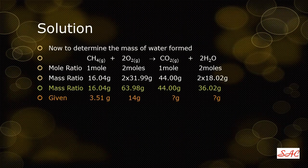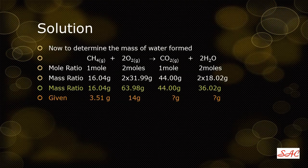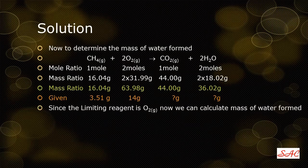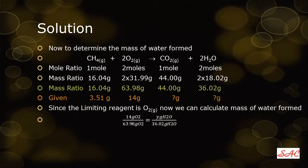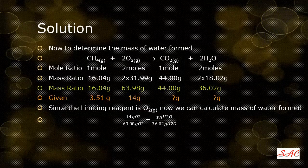Now I have to determine how many grams of water will be formed by the combustion of 14 grams of oxygen and 3.51 grams of methane. I will establish a ratio between oxygen and water. Since oxygen is the limiting reagent, I select oxygen and water to make the ratio. In the denominator I use the mass ratio: 63.98 grams of oxygen. In the numerator, 14 grams of oxygen is undergoing combustion. On the product side, 36.02 grams of water is formed according to the balanced equation. I want to know how many grams of water would actually form if 14 grams of oxygen undergo combustion, so I solve for y.